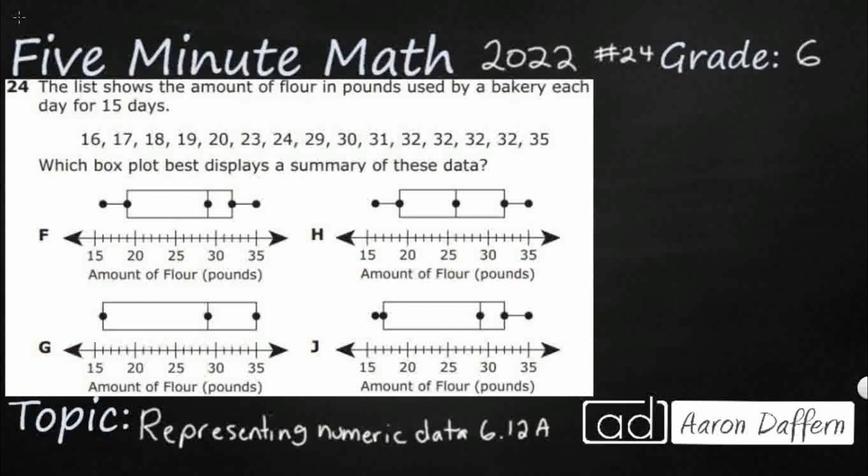So we have a list of flour in pounds for 15 days, and we need to represent it as a box plot. Now, we are in luck. For this particular problem, they already put it in order because that is step 1. So step 1 is put in order. And you have to put in order from least to greatest. I always prefer least to greatest because nothing else works. If you don't do that, but they've already done this for us.